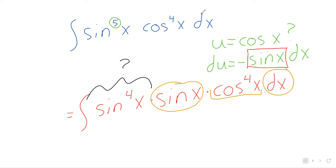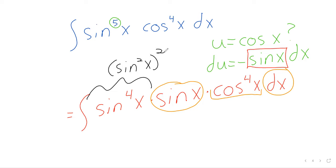So we rewrite sine to the fourth as sine squared of x, squared.